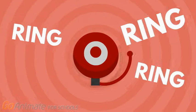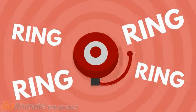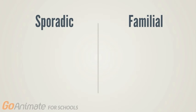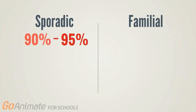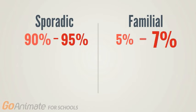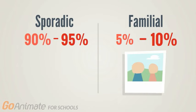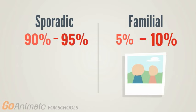It is important to note that there are two types of ALS, sporadic and familial. Sporadic is more common of the two types and is seen in 90 to 95% of patients diagnosed with ALS.